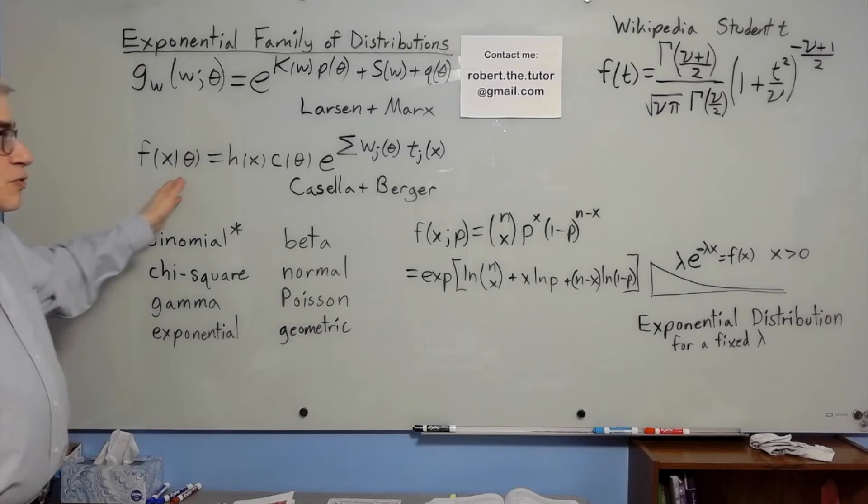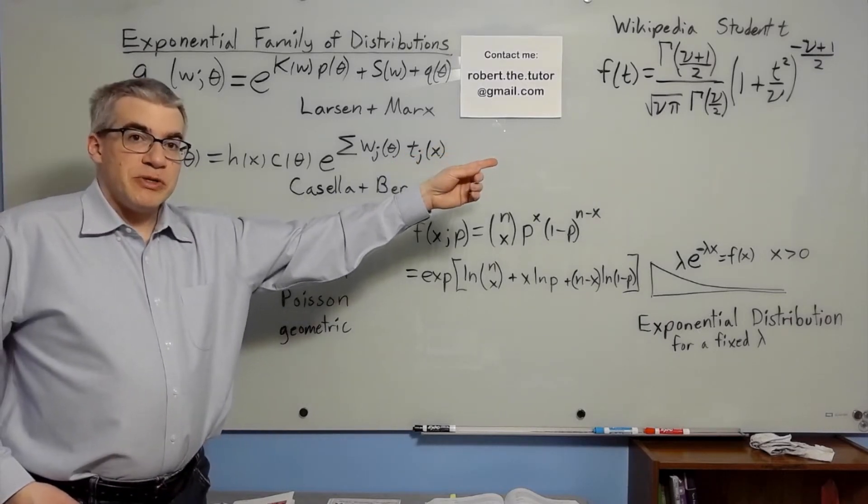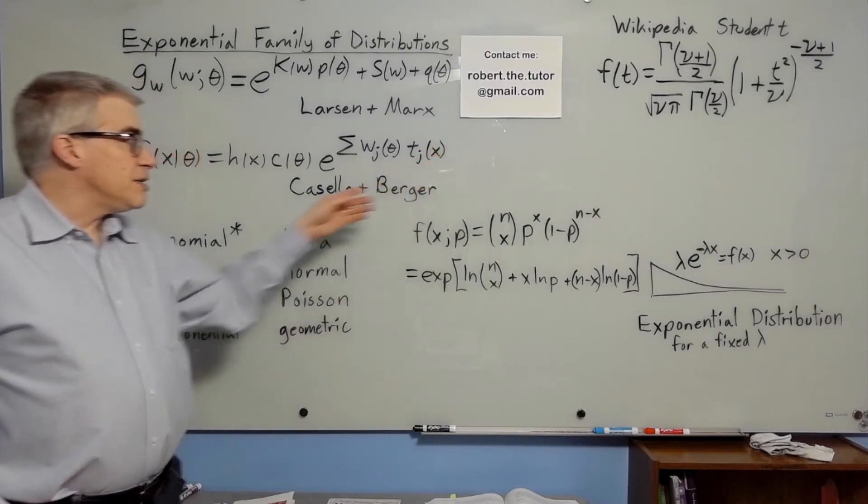There are some that don't, for example the student t distribution. There's no way to rewrite that so that it looks like this.